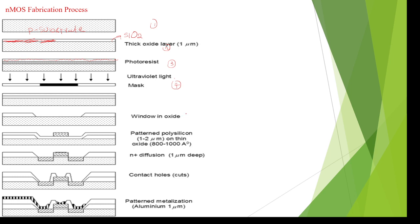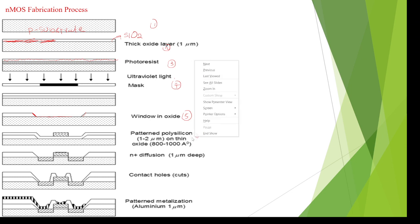In the fifth step, we remove the photo resist as well as the SiO2 layers where the diffusions are required. We can see this area — this part is removed, which is the photo resist as well as the silicon dioxide layer.